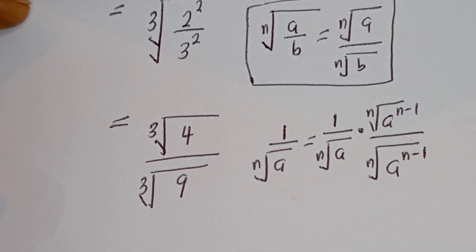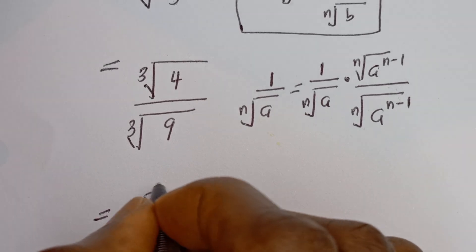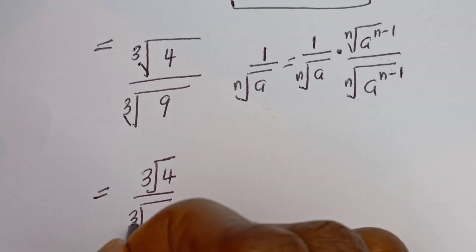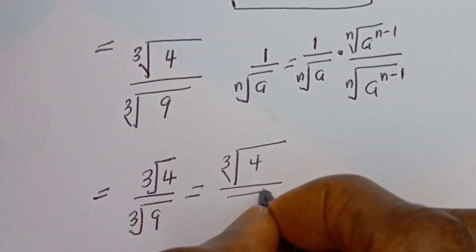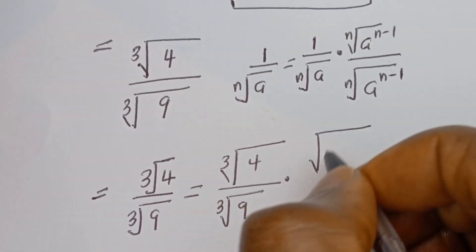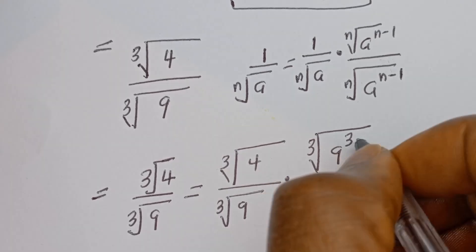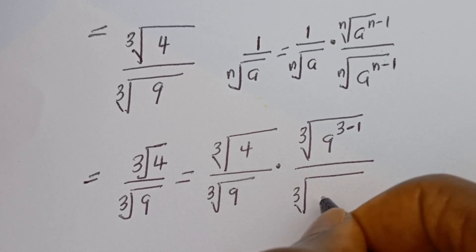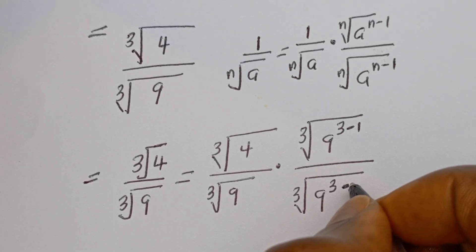So then let's transform this in that form. We have the cube root of 4 divided by the cube root of 9, and this is equal to the cube root of 4 divided by the cube root of 9, multiplied by the cube root of 9 to the power of 3 minus 1, divided by the cube root of 9 to the power of 3 minus 1.